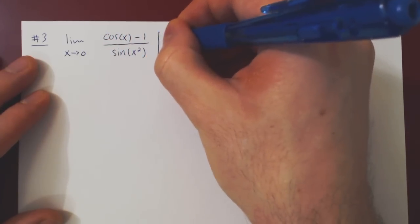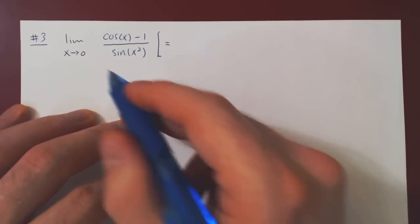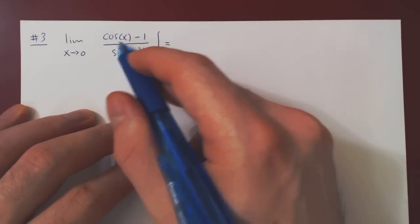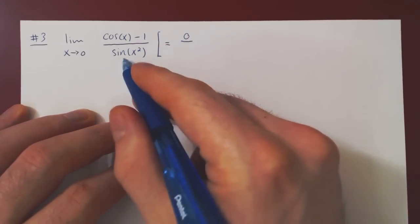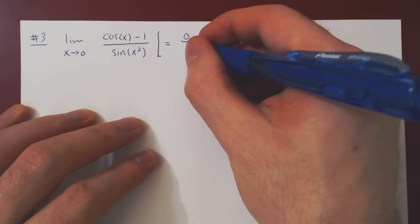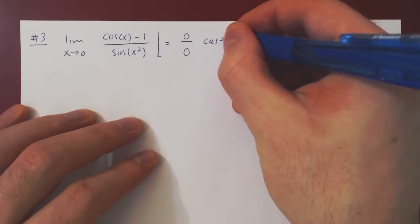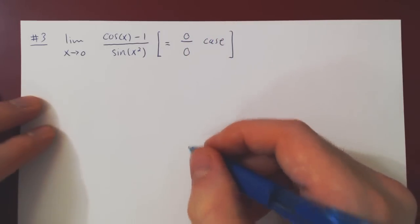As always, we consider a case. As x goes to 0, cos of 0 approaches 1, 1 minus 1 is 0. As x goes to 0, so does x squared, and sin of 0 is 0. So we have 0 over 0 case, we can apply L'Hopital's rule.